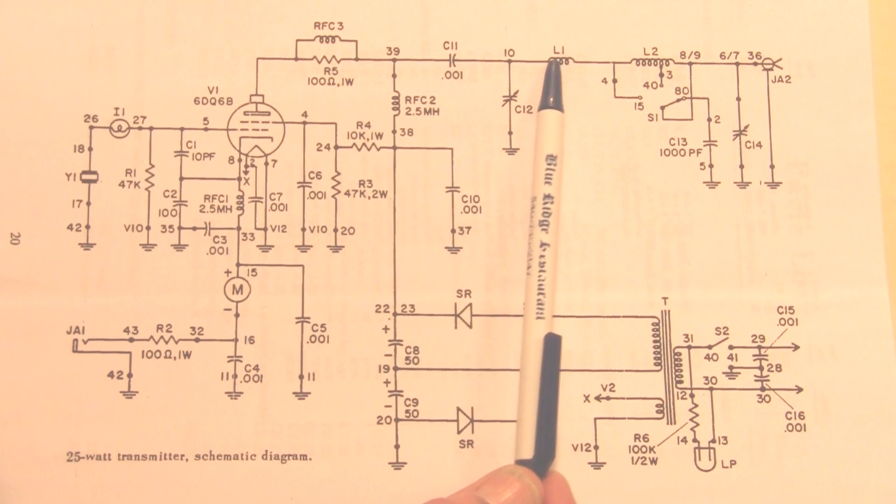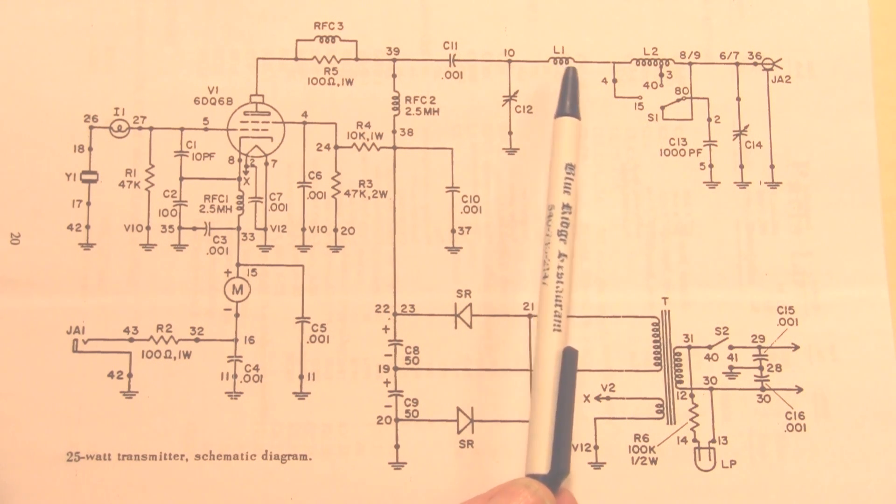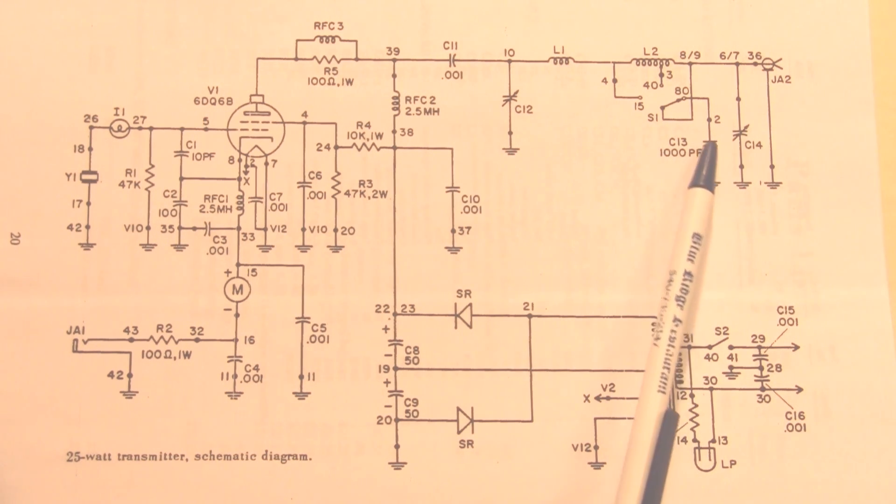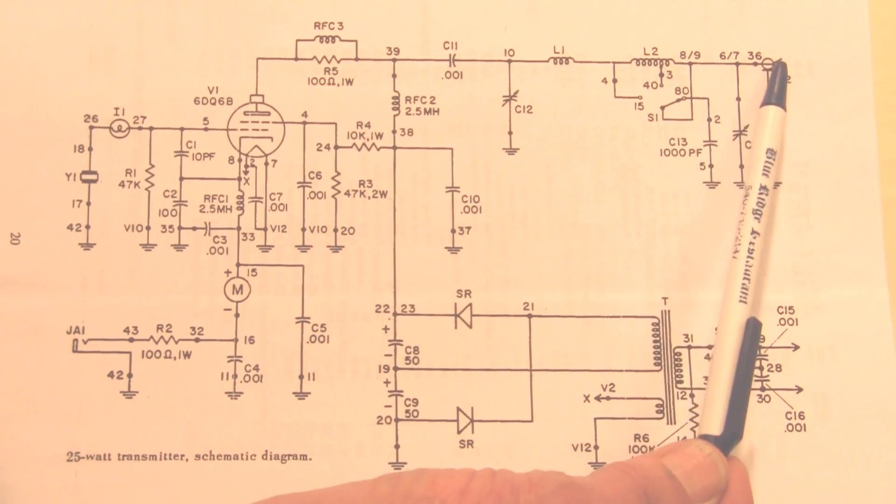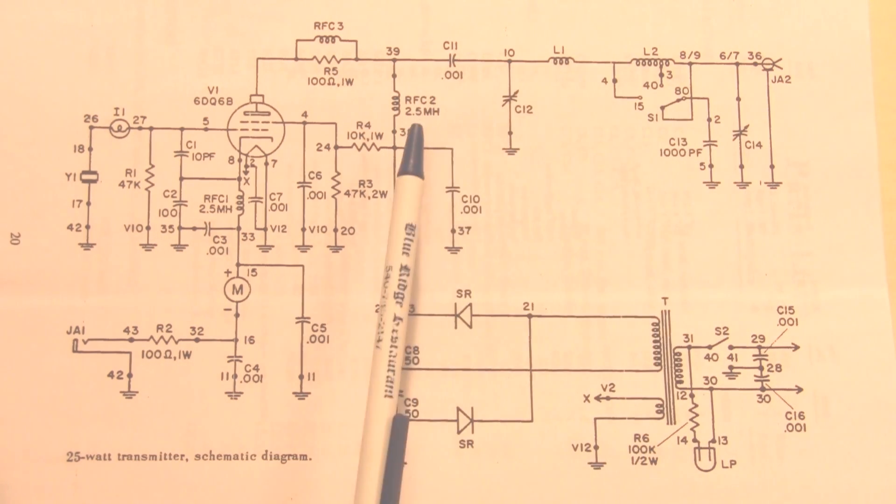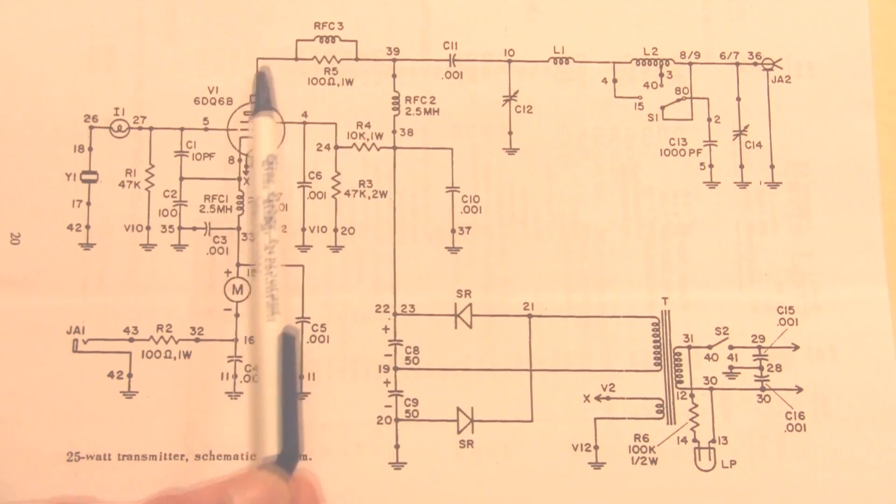This is some added inductance here. And here's the pi network tuning, the input tuning and the output tuning. And here's a fixed capacitor here as well. This is the output that goes to the output. So this is a pi network circuit. Here's the transmitter circuit.